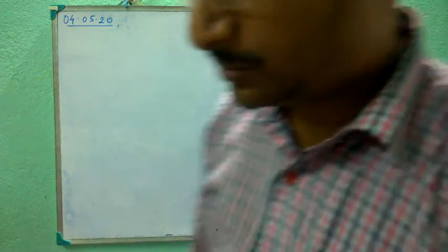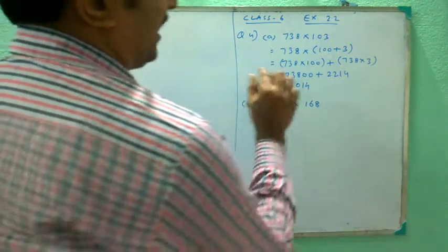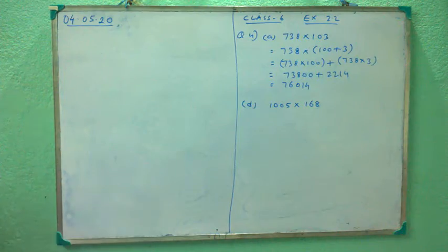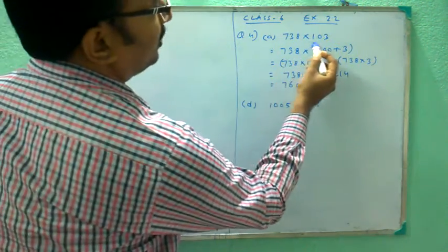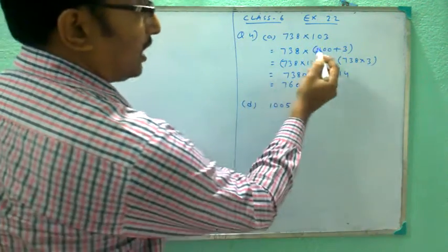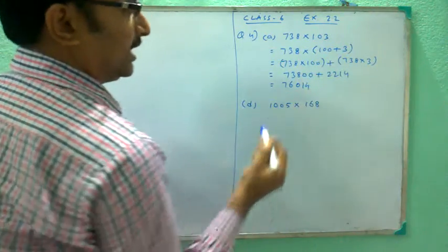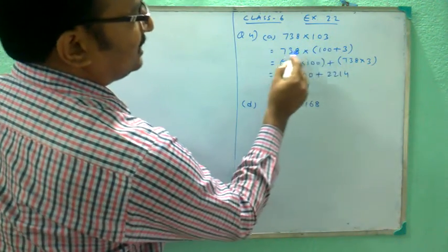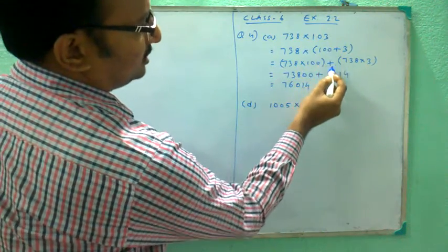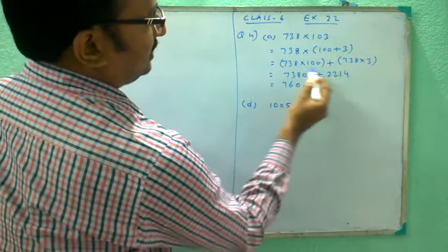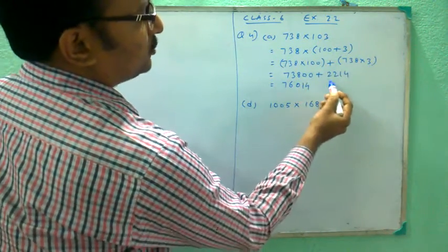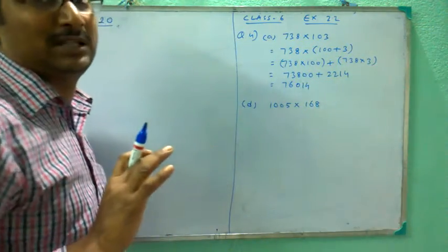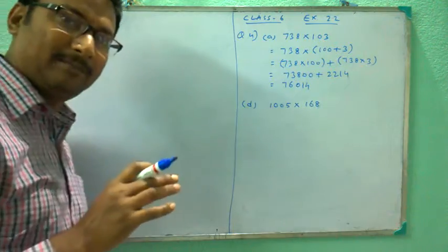Distributive property simply means we are going to break any one of the numbers so that our calculation becomes simpler. I have broken down 103 as 100 plus 3. This 738 will get multiplied by both numbers: 738 into 100 plus 738 into 3. So 738 into 100, put two zeros, and 738 into 3 is 2214. Now after adding we are getting 75914.